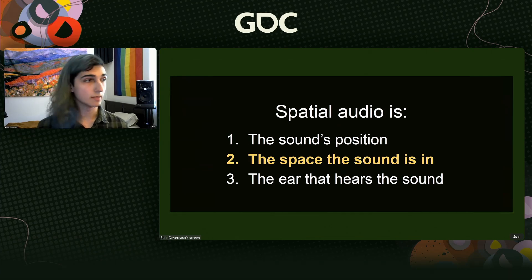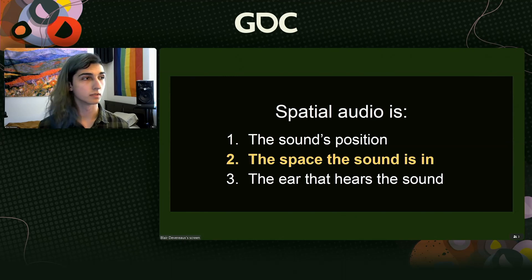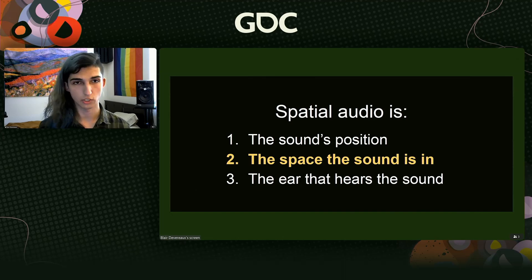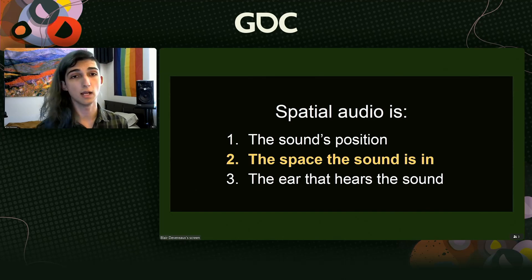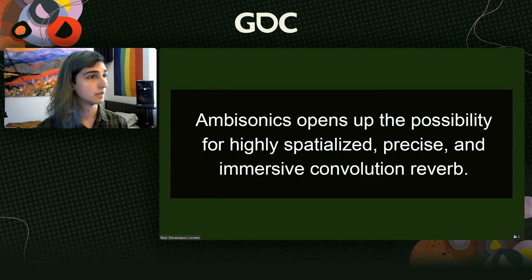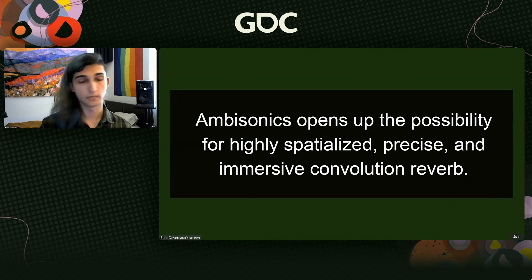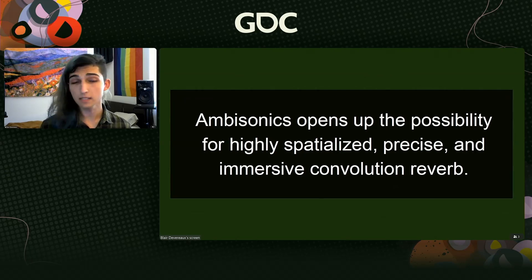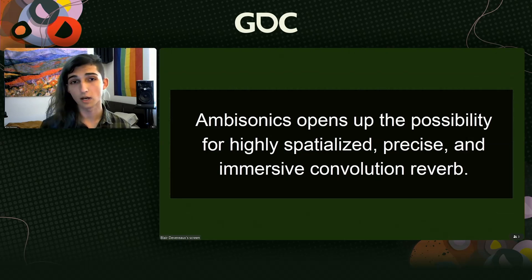I believe that ambisonics provides a good solution for the sound's position, providing high-quality positional information. It can also provide a solution for the space the sound is in, because using ambisonics to simulate the position of sounds opens up the possibility for highly spatialized, precise, and immersive convolution reverb.